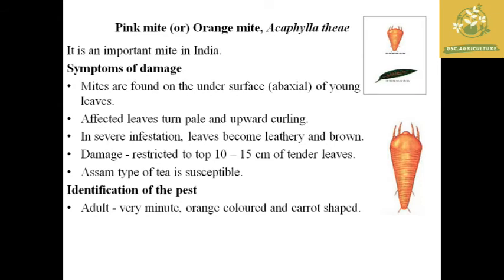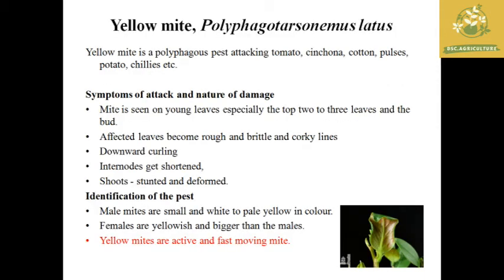The pink mite or orange mite, with the scientific name Acaphylla theae, is an important mite pest of tea in India. The symptom: it is found on the underside of leaves, causing upward curling of affected leaves; in severe infestation leaves become leathery and brown. Damage is restricted to the top 10 to 15 cm of tender leaves. The Assam type of tea is susceptible. The adult is very small, orange-colored, and carrot-shaped.